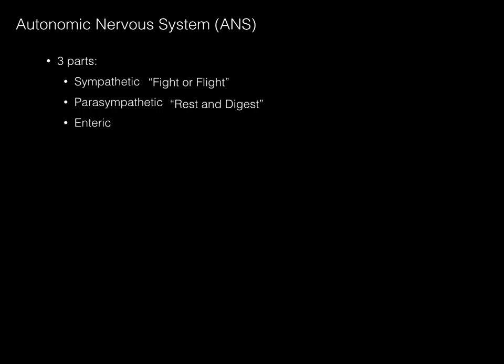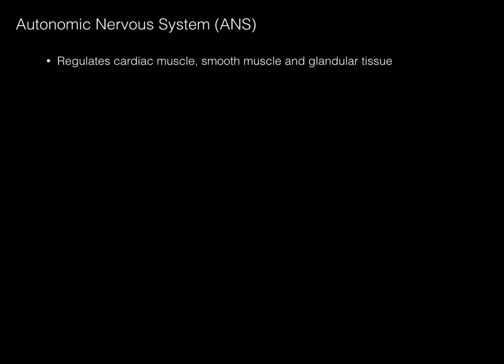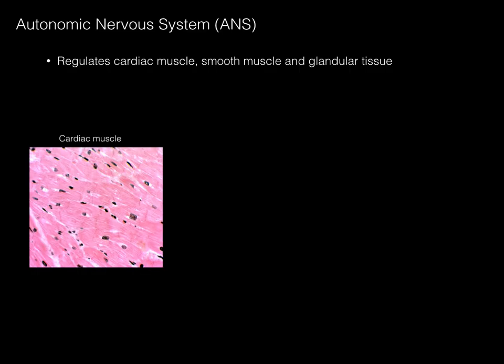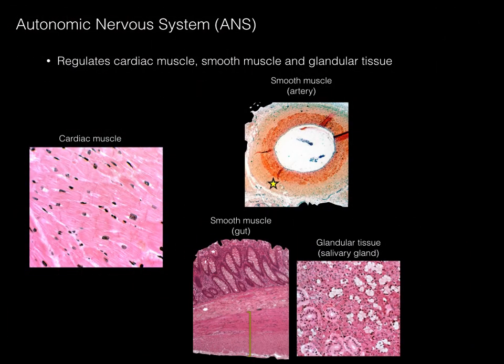The sympathetics focus on innervating smooth muscle that you don't have control over, primarily the smooth muscle of blood vessels like arteries. Parasympathetic is focused on smooth muscle as well, except it's the smooth muscle of the GI tract and the glands associated with that. The autonomic nervous system regulates cardiac muscle, smooth muscle, and glandular tissue. Both sympathetic and parasympathetic innervate cardiac muscle — sympathetic increases heart rate and cardiac output, parasympathetic does the converse. Sympathetics innervate the smooth muscle of arteries, while parasympathetics innervate the smooth muscle of the gut tube and salivary glands.